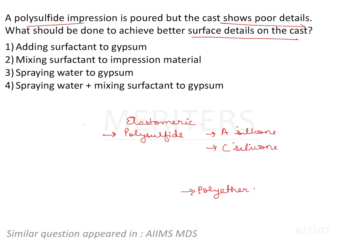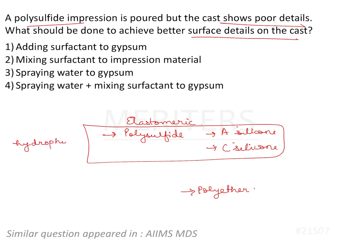Of these materials, the first three — polysulphide, A-silicon, and C-silicon — are hydrophobic in nature inherently. However, there are a few modifications of A-silicon which are now available as hydrophilic versions, called hydrophilized A-silicon. But in general, these are hydrophobic only. Polyether is hydrophilic.